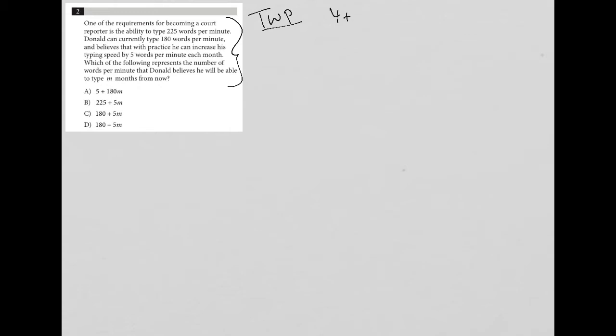Let's get started. The first sentence says one of the requirements for becoming a court reporter is the ability to type 225 words per minute. So I'll write CR for court reporter equals 225 WPM, which stands for words per minute.